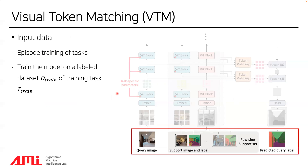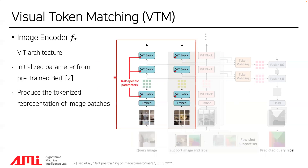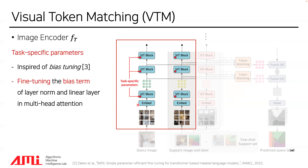The input data is the episodic training of tasks — labeled datasets of training tasks. For the image encoder, they use a ViT architecture, initialized with pre-trained BEIT parameters. Because BEIT is trained using a self-supervised approach, they argue that BEIT is less biased toward specific tasks. The image encoder produces tokenized representations of image patches. In the image encoder, there are task-specific parameters with minimal parameters. Inspired by bias tuning, a parameter-efficient fine-tuning method, they fine-tune the bias terms of layer norm and the bias terms of linear layers in multi-head attention.